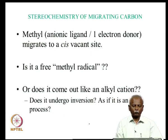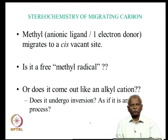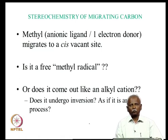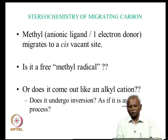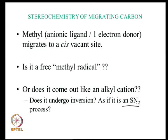If it migrates to a cis vacant site, then we can ask: what will happen to the stereochemistry? If it migrates as a free methyl radical, what would happen to the stereochemistry? It is also known that the methyl group can migrate as an alkyl cation, especially when it is substituted. So we can think of it as if a nucleophilic substitution has been carried out on the methyl group, in which case it will have to undergo inversion during the process.